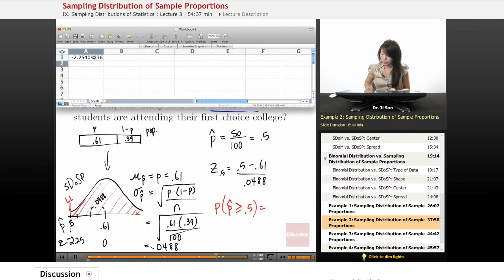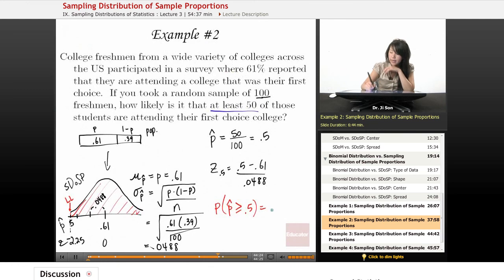Okay, so here, we want to know, and remember, in Excel, they give us the negative side, so we would have to do 1 minus this little piece. So 1 minus NORM.S.DIST, NORM.S standardized, that's how we get that z. And we put in our z, and we should get 0.9879. So very, very close to almost everybody, 0.9879. So almost 99% of our samples should have at least 50% of those students attending their first-choice college.